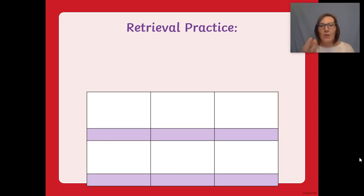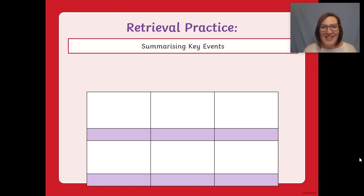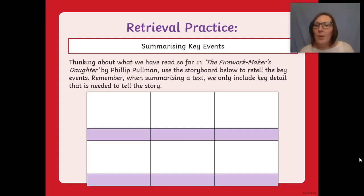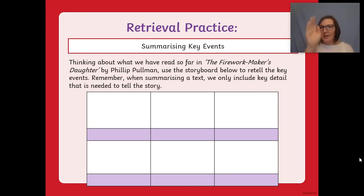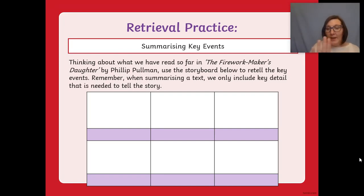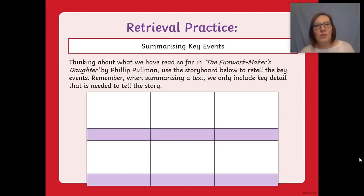The first thing we're going to do is a little bit of retrieval - thinking back to Lila and her father and the journey she was going on. I'd like you to summarise the key events from The Fireworkmaker's Daughter by Philip Pullman. Use the storyboard on your worksheet to retell the key events. Remember, you're going to summarise it - just the key parts, not the whole story. Pop them into order on your storyboard. Pause the video here and have a go at that now.